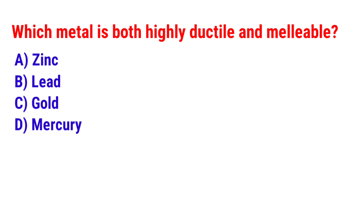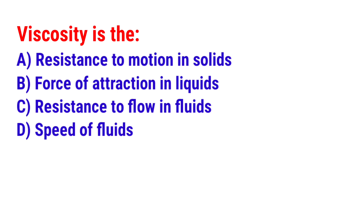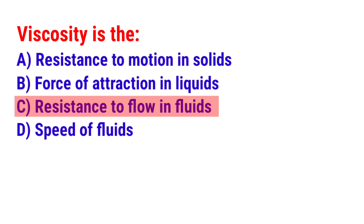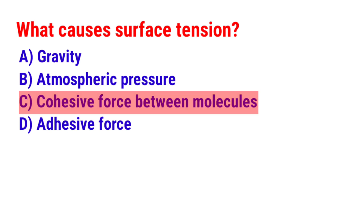Next question: Which metal is both highly ductile and malleable? The answer is option C — Gold. Unit number 6: Fluid Mechanics. Next question: Viscosity is the? The answer is option C — Resistance to flow in fluids. Next question: What causes surface tension? The answer is option C — Cohesive force between molecules.